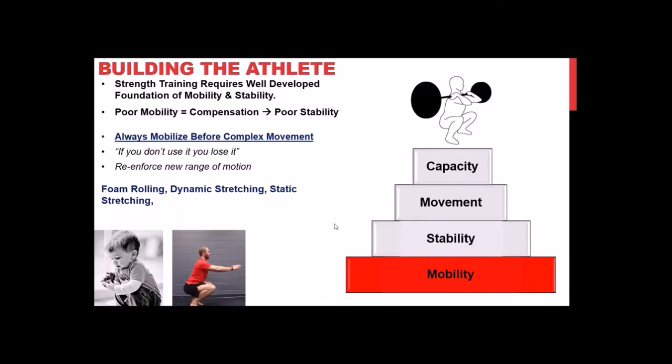The first tier is mobility, and it's at the bottom of the pyramid because you need high levels of mobility to strength train properly. Eventually athletes will be negotiating heavy weights, and without adequate mobility they'll create compensations and end up with poor stability, dramatically increasing injury risk. Mobility is the key quality that needs to be present before anything else.